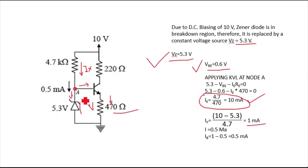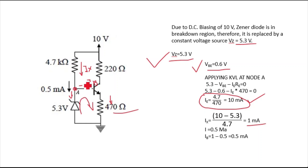The Zener diode current is 0.5 mA. To find IB, apply KCL at the base node: IB = IX − IZ = 1 mA − 0.5 mA = 0.5 mA.